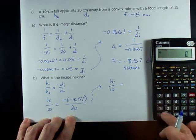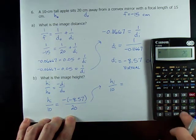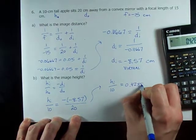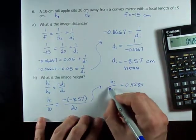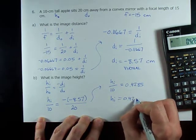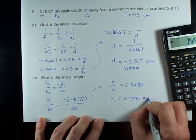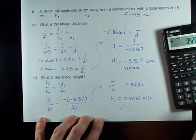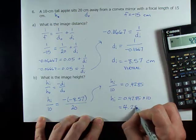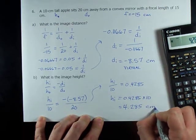8.57 divided by 20, 0.4285. And to undo dividing by 10, I just take that number and I multiply it by 10, which gives me 4.285 centimeters.